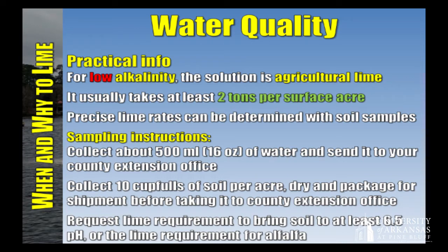The safest solution for low alkalinity is agricultural lime. When we sample a pond and find low alkalinity, we use a blanket statement: put in two tons per acre. That sounds unscientific, but one cool thing about agricultural lime is you can't really overdose on it. If you put too much in, it just precipitates as white powder on the bottom and doesn't hurt the fish. Putting too much in just extends the period before you have to reapply.